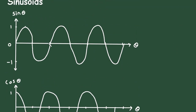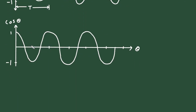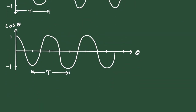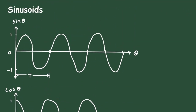For this sin waveform, the time period is from this 0 to this point because here it completes one complete cycle, and it is represented by T. For this cosine, the waveform is starting from here, and we take up to here — so this is the time period T. This is the sine waveform and this is the cosine waveform.